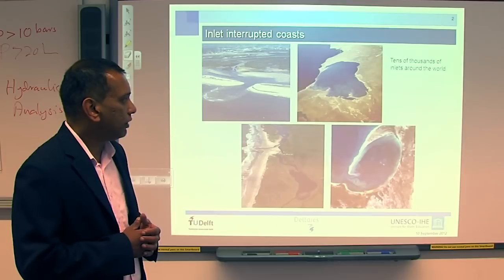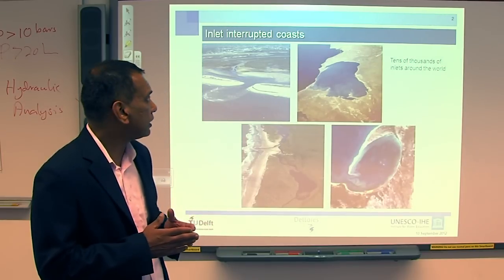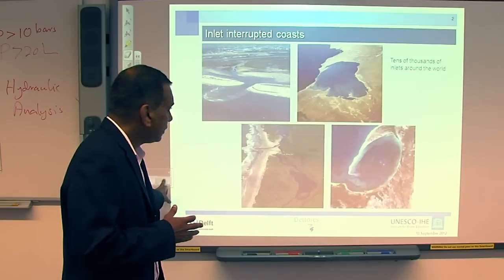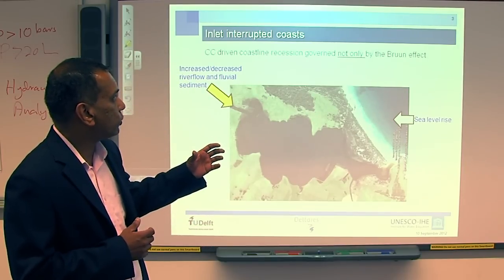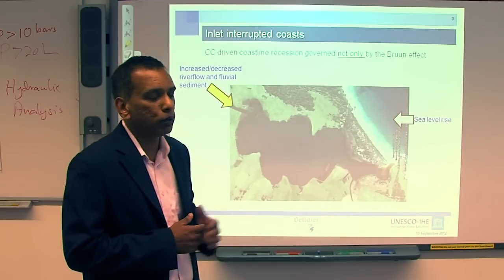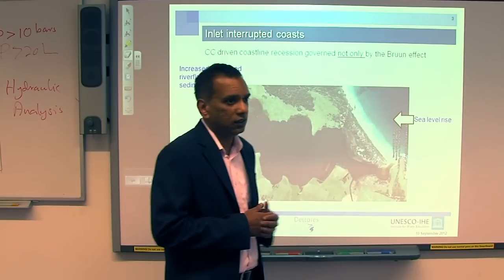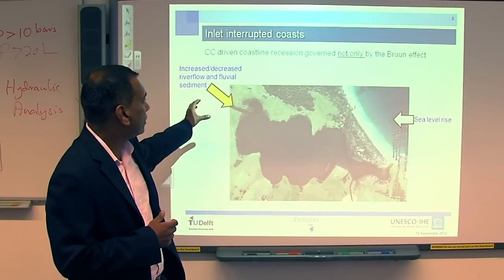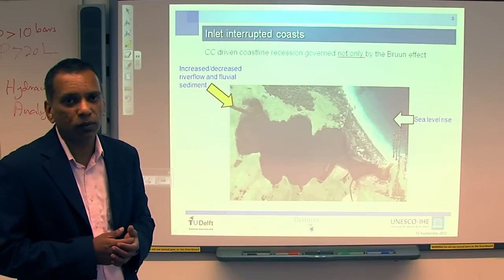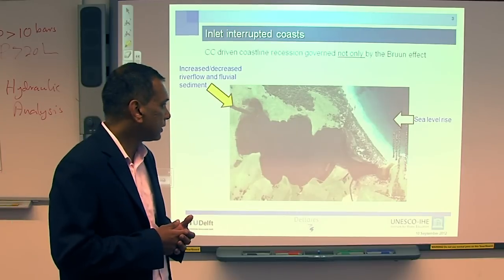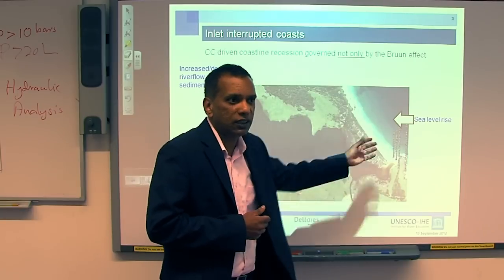These are very commonly found around the world. On coastlines that are interrupted by inlets — we refer to them as inlet-interrupted coastlines — the recession process is a little bit more complicated than on open coastlines. The recession is not only governed by the Bruun effect but also by other processes. In these systems, we have the effect of sea level rise, but also on the landward side, climate change can result in increased or decreased river flows, and also more or less sediment coming into the system. These two combined effects will contribute to coastline erosion.